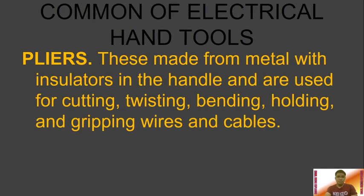Then we have pliers. Pliers are made from metal with insulators on the handle and are used for cutting, twisting, bending, holding, and gripping wires and cables. That is the most common use of pliers — for cutting, twisting, bending, holding, and gripping of wires and cables.